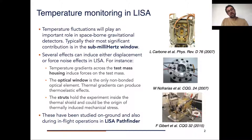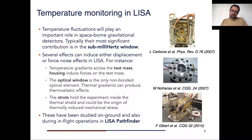One of them is temperature gradients across the test mass that could produce forces on the test mass. The optical window, for instance — an optical element which is a non-bonded element at the interface between the GRS and the optical bench — thermal gradients there could produce thermo-elastic effects. Also, temperature gradients in the structure itself, for instance on the struts that hold the experiment inside the thermal shield, could be the origin of thermally induced mechanical stress effects.